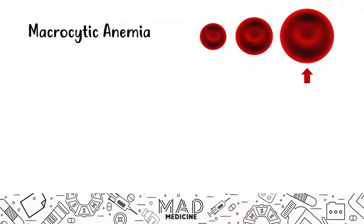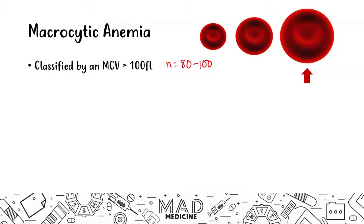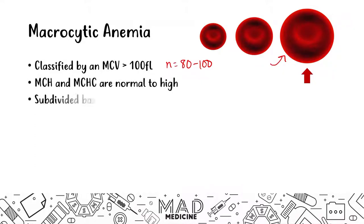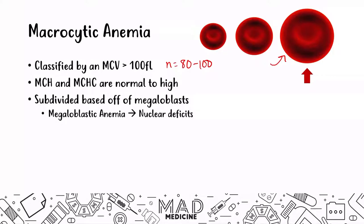Macrocytic anemias are classified by an MCV that is greater than 100. A normal MCV is usually 80 to 100 — anything more than 100 is macrocytic, meaning it's going to be a large red blood cell size. The MCH and MCHC are either going to be normal to high. You can subdivide macrocytic anemias based on megaloblasts: megaloblastic anemias due to nuclear deficits, and non-megaloblastic anemias which are not due to nuclear deficits.